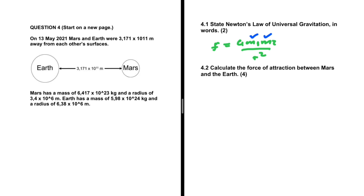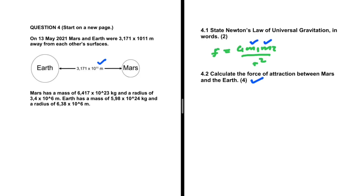Problem 4.2: calculate the force of attraction between Mars and Earth. On 13 May 2021, Mars and Earth were 3.171 times 10 to the power 11 meters away from each other's surfaces. Mars has a mass of 6.417 times 10 to the power 23 kg and a radius of 3.4 times 10 to the power 6 meters, while Earth has a mass of 5.98 times 10 to the power 24 kg and a radius of 6.38 times 10 to the power 6 meters.